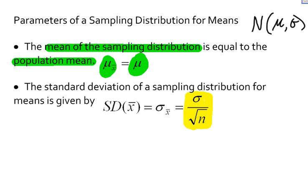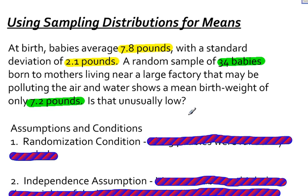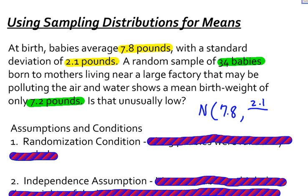Going back to my original problem, if all of my assumptions and conditions check out, then I know I am going to end up using a normal model where the mean is 7.8 and the standard deviation is equal to 2.1 divided by the square root of 34. That's what I want to use, but I have to check my assumptions and conditions first.